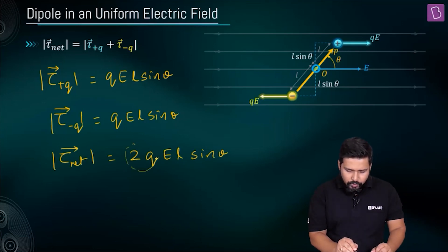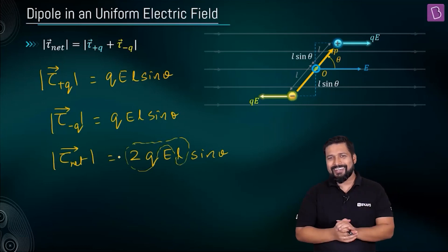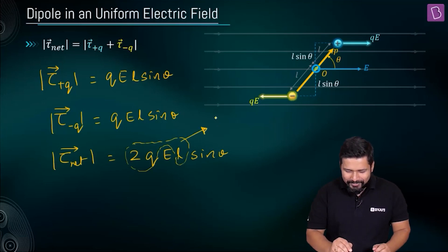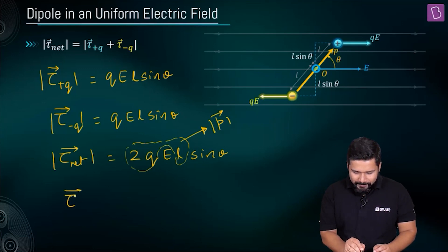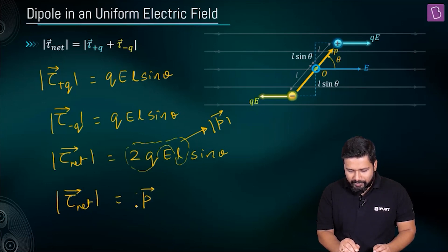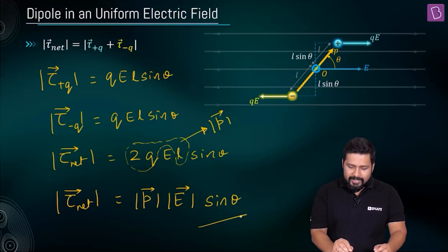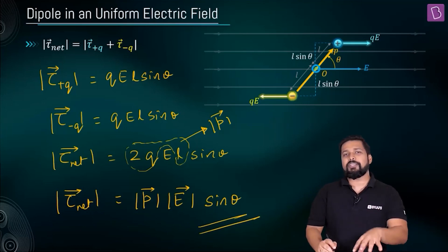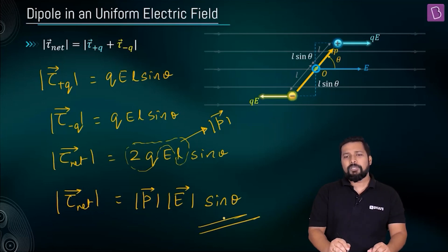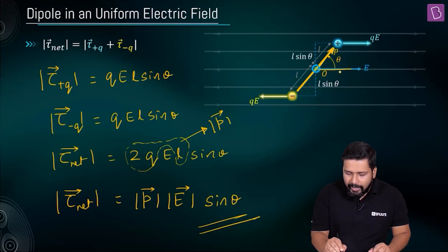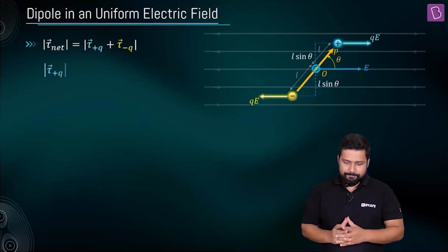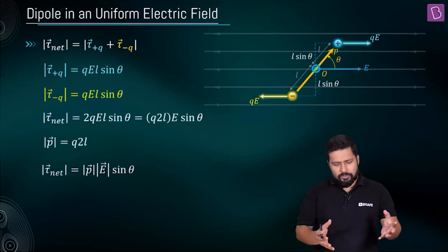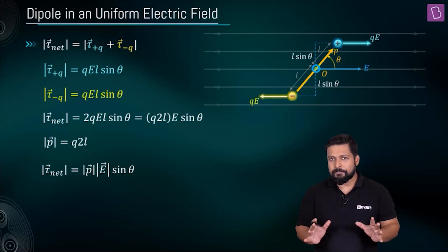Now, you see 2Q and L — that is nothing but the magnitude of the dipole moment vector. So I can write the magnitude of the net torque as equal to the magnitude of the P vector times the magnitude of the E vector times sinθ. This is the formula for the torque experienced by a dipole when it is placed in a uniform electric field. Theta is the angle between the dipole moment vector and the electric field. Now we know the formula and how to calculate the net torque.